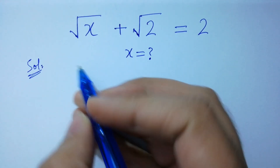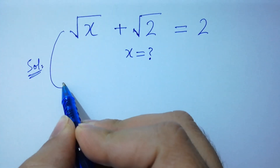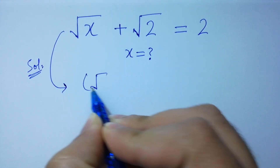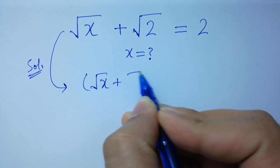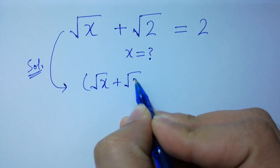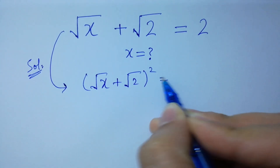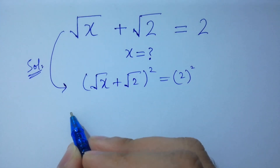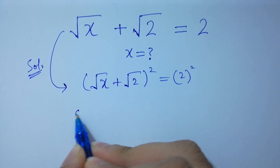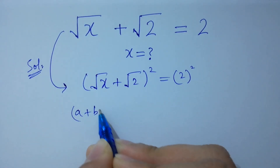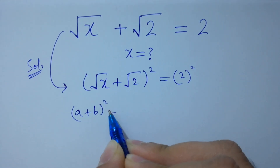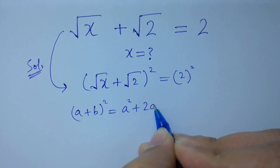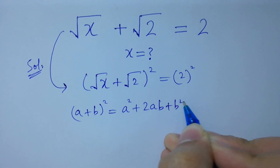To solve this, take square on both sides. As we know, the formula: a plus b whole square equals a squared plus 2ab plus b squared.